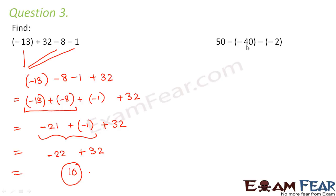Let's look at the next one. 50 minus minus 40 minus minus 2. So in this case, again let us do the same thing. So 50 minus minus 40. So subtracting a number is the same as adding its additive inverse. So this becomes 50 plus 40. Similarly in this case also subtracting minus 2 is same as adding the additive inverse of minus 2. So additive inverse of minus 2 is plus 2.